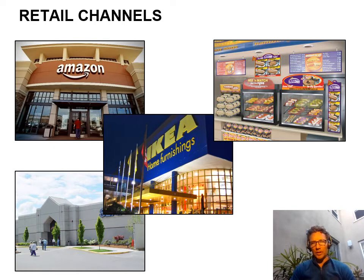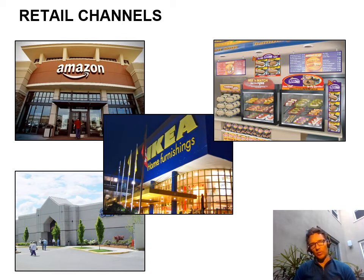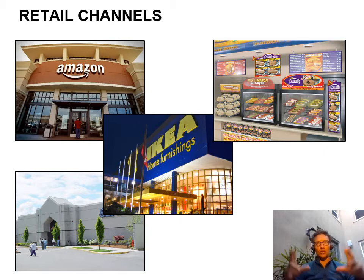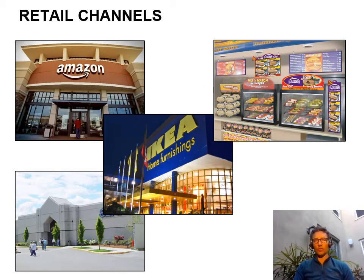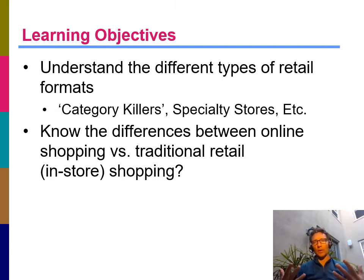In this week's lecture we're going to be talking about the different types of retail formats. More and more of us are now shopping online and retail channels are scrambling to survive in the Amazon era. That said, there's still a lot of things we purchase in a traditional retail store. We'll cover these retail concepts as part of the channel of distribution. Two primary learning objectives: know the five main types of retail formats, and understand how shoppers differ between online and traditional store settings.